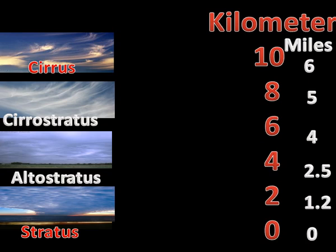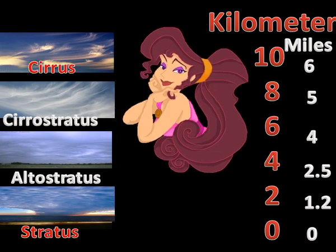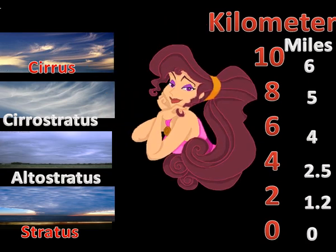Cirrus clouds generally refer to very high clouds characterized by thin, curled strands, often bunched into tufts, leading to their common name of mare's tail. The word cirrus is Latin for curl, and cirrus clouds commonly resemble curly hair. They range in color from white to faint gray, are on average about 1.5 kilometers thick, and the center of the cloud is around 9 kilometers above sea level.